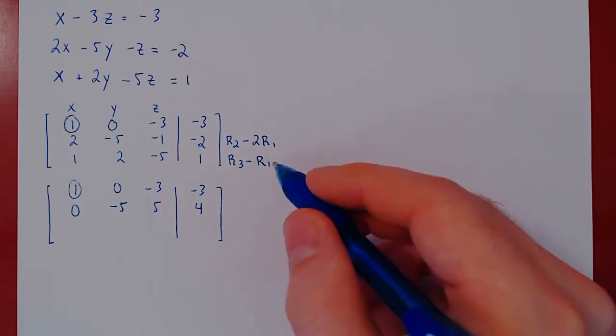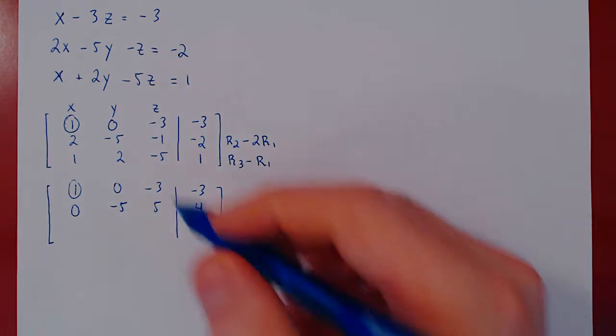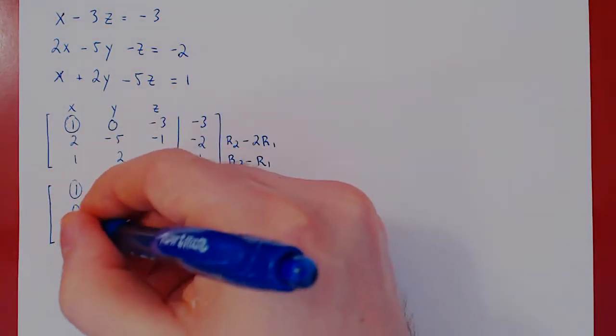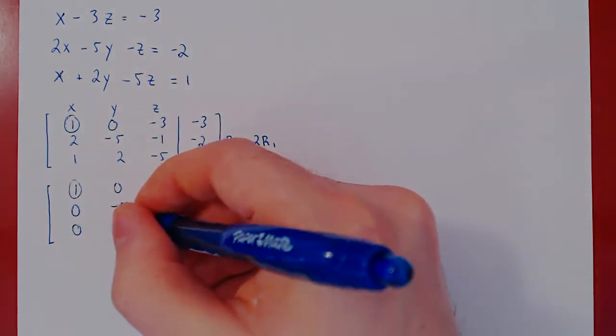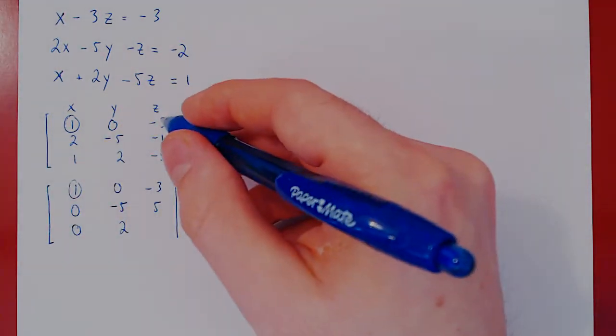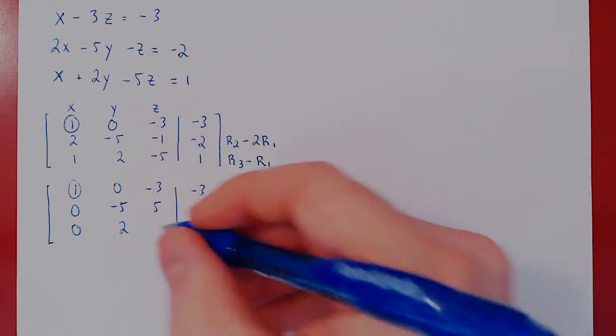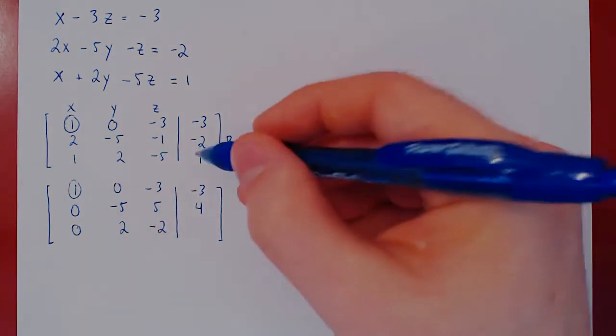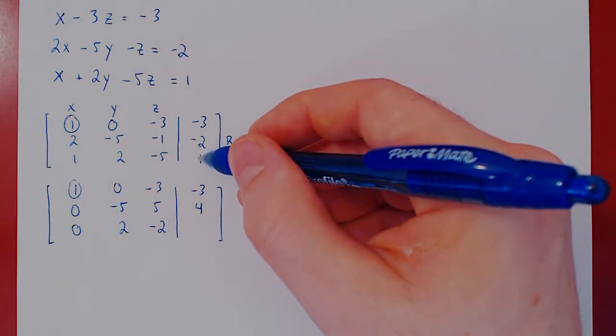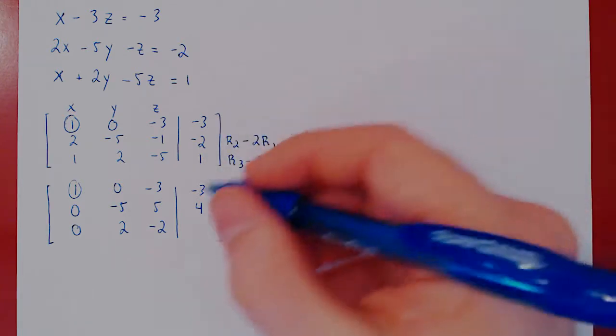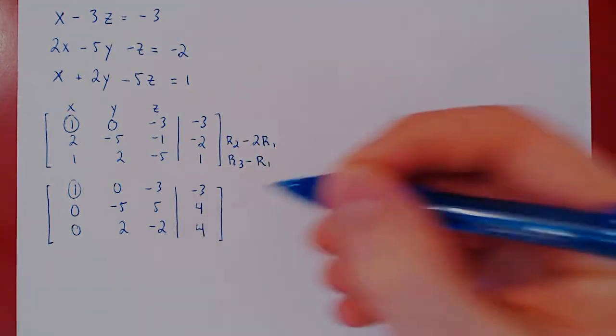Let's apply the second row operation. Row 3 minus row 1. 1 minus 1 is 0. 2 minus 0 is 2. Negative 5 minus negative 3 is negative 5 plus 3, negative 2. 1 minus negative 3 is 1 plus 3, positive 4.